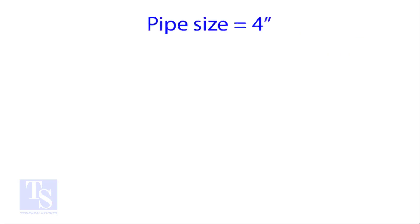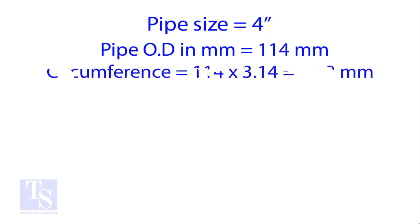Let us try an example. Calculate the cutback of a 4 inch pipe with 4 cuts. OD of a 4 inch pipe is 114 millimeters. Multiply the OD by 3.14 for the circumference.